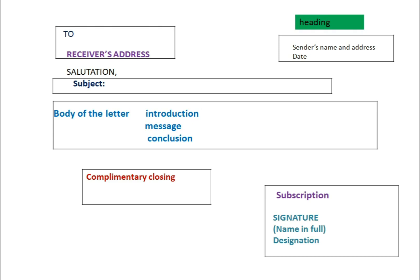Let us go through the format of the formal letter. The sender's name and address can be written at the top left side of the paper. After that, the 'To' receiver's address is written below on the right-hand side. Then below that, we write the salutation, then the subject, then the body of the letter, then the complementary closing, then the subscription and signature. Note that there are two ways of ordering: some write the subject before the salutation, and some write the salutation before the subject — both are allowed.